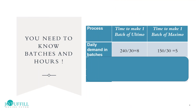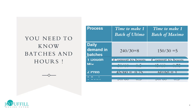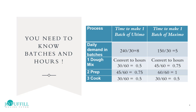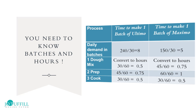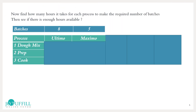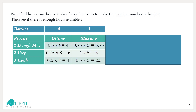We need to create a new table converting daily demand into batches by dividing by 30, and converting the time on each process from minutes into hours by dividing by 60. We're now ready to find out which process is the bottleneck. We need to find out how many hours it takes for each process to make the required number of batches, then check if there are enough hours available. Ultimo is 8 batches and Maximo is 5 batches. Multiplying hours by batches shows 8 batches will take 4 hours of dough mixing time for Ultimo.